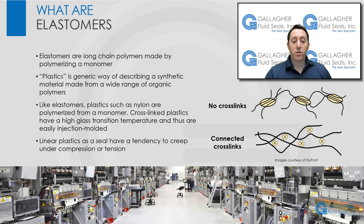Elastomers are long chain polymers made by polymerizing a monomer. Because the molecules can rotate at the carbon atom, which are held by single bonds, the chains can get thoroughly entangled. Since the intermolecular forces in this state are not strong, the polymer is like a very viscous liquid. At room temperature, elastomers usually have not reached a crystalline state and stay in the elastic form.